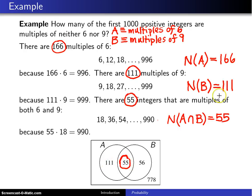Likewise, if we know that there are a total of 111 multiples of 9, then that leaves 56 because these two numbers have to add to 111, 56 numbers that are multiples of 9 but not multiples of 6.